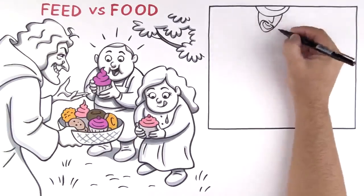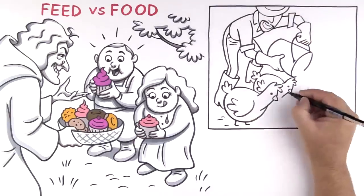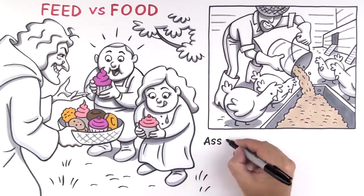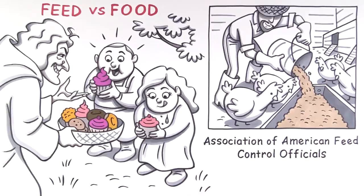Feed is manufactured to be high-fat and high-carb with the intent to plump livestock up for the slaughter. Livestock farmers provide feed that adheres to the standards of the Association of American Feed Control Officials, or AAFCO.